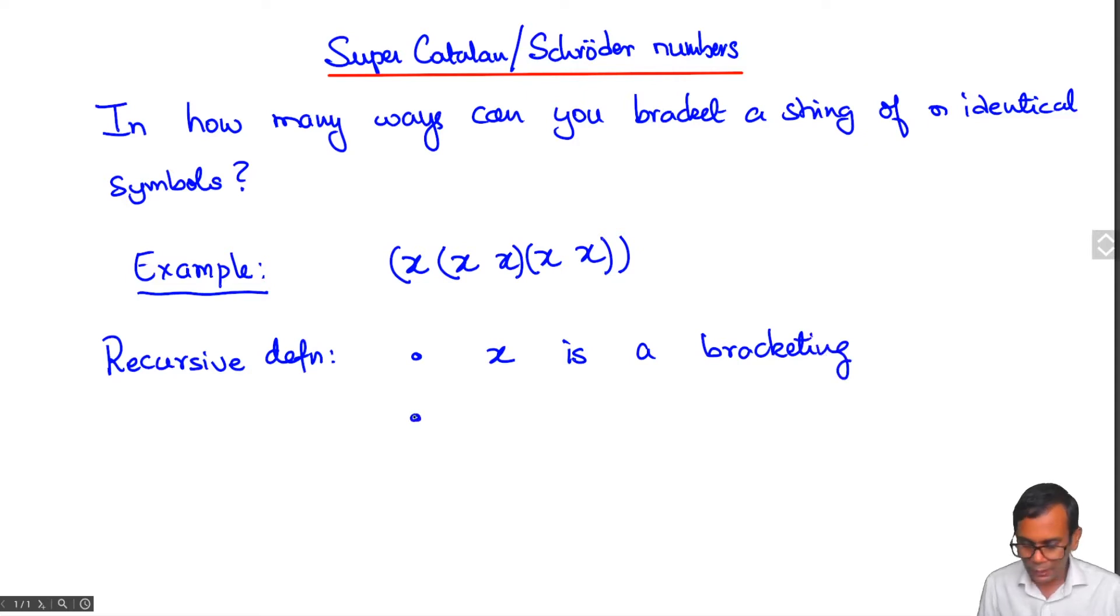And then we can build up a bracketing by bracketing together a bunch of other bracketings. So if sigma 1, sigma 2, sigma k are bracketings for k greater than or equal to 2, then bracketing these together is a bracketing.